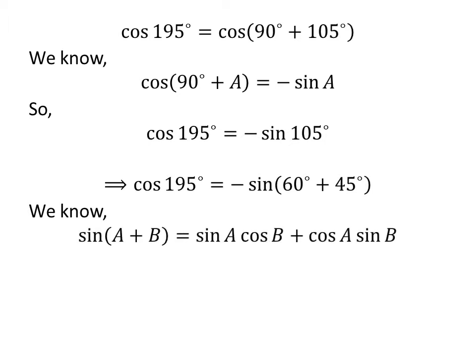We know the sine addition formula: sine of A plus B is equal to sine of A times cosine of B, plus cosine of A times sine of B.